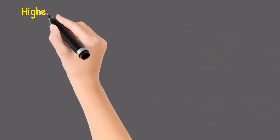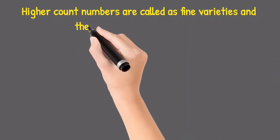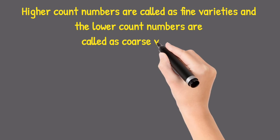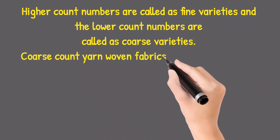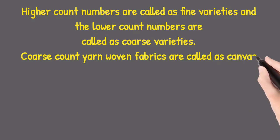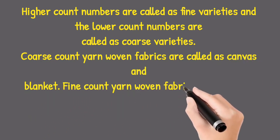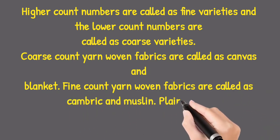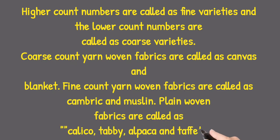Higher count numbers are called as fine varieties and the lower count numbers are called as coarse varieties. Coarse count yarn woven fabrics are called as canvas and blanket. Fine count yarn woven fabrics are called as cambric and muslin. Plain weave fabrics are called as calico, tabi, alpaca, and taffeta.